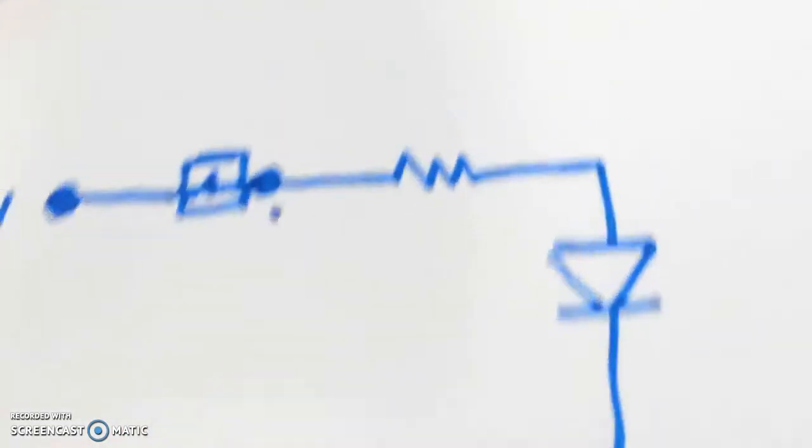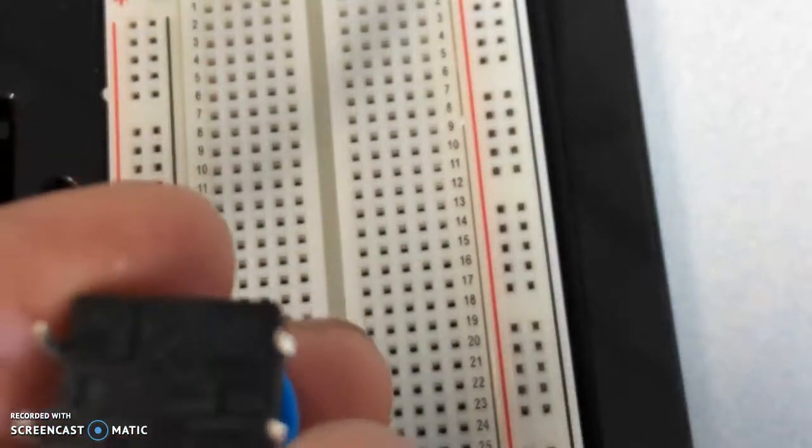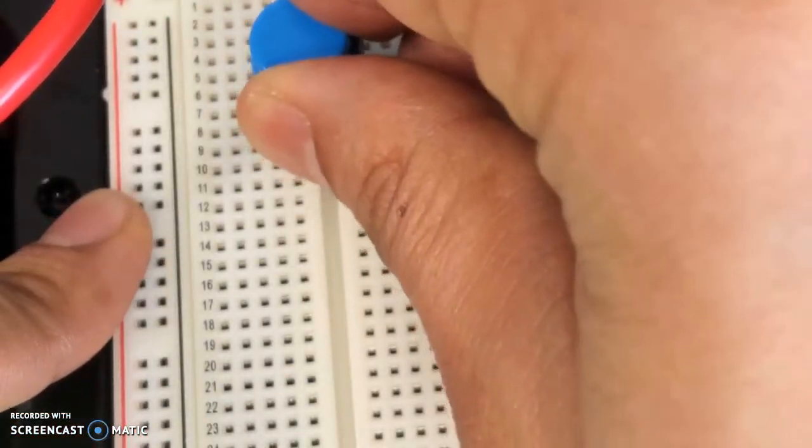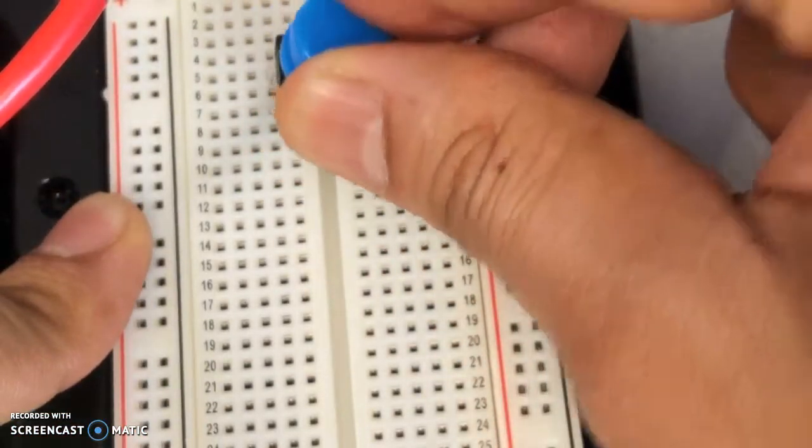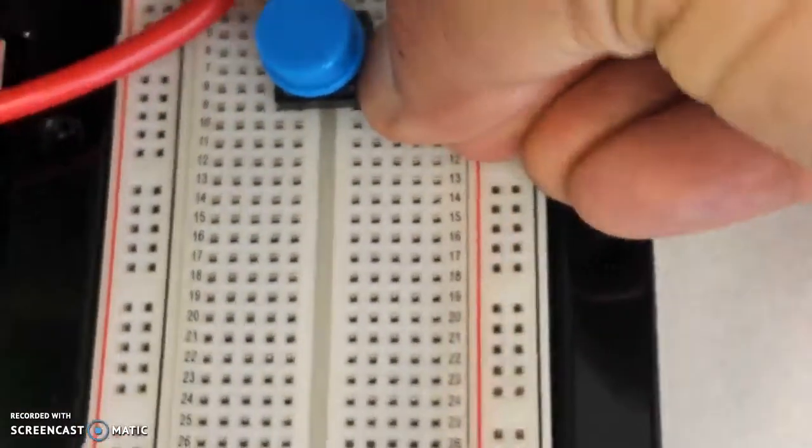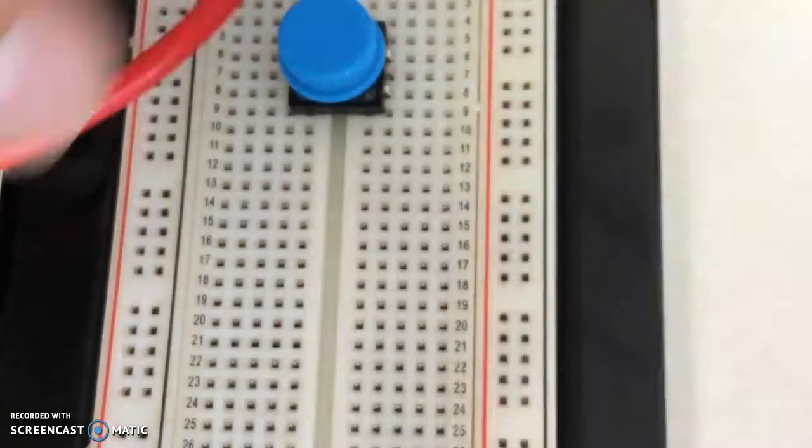So this is what we're going to wire. I'm going to place a switch. In the switch you'll notice there are 4 pins, the top 2 pins. I'm going to place it in the breadboard like this. So now they're in the breadboard.